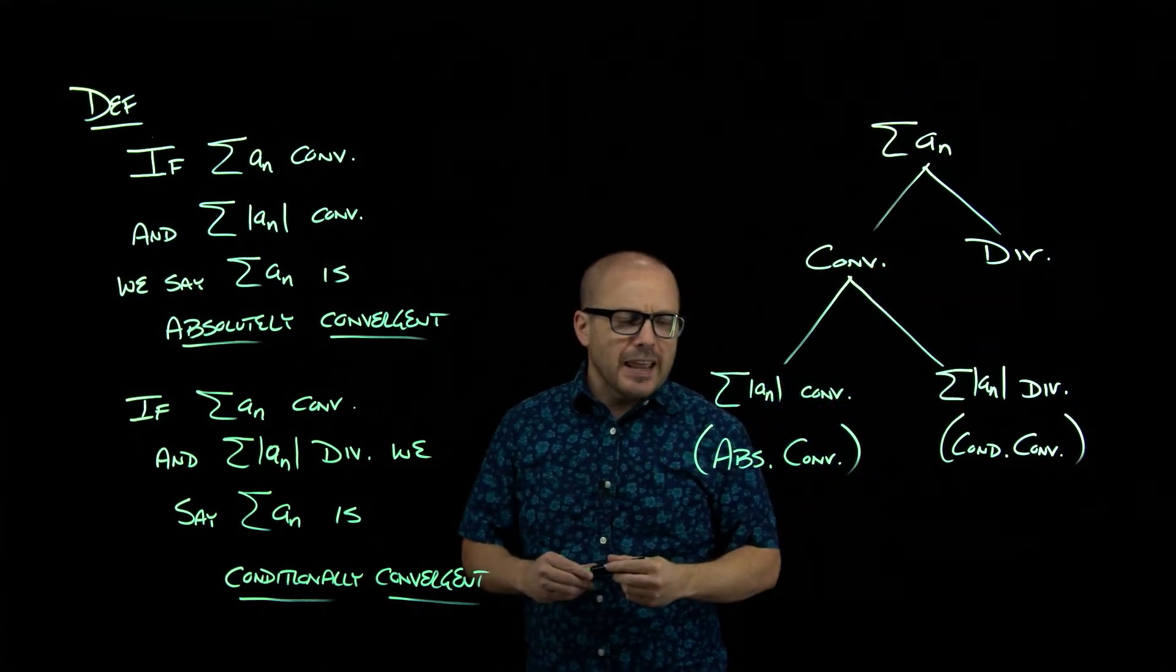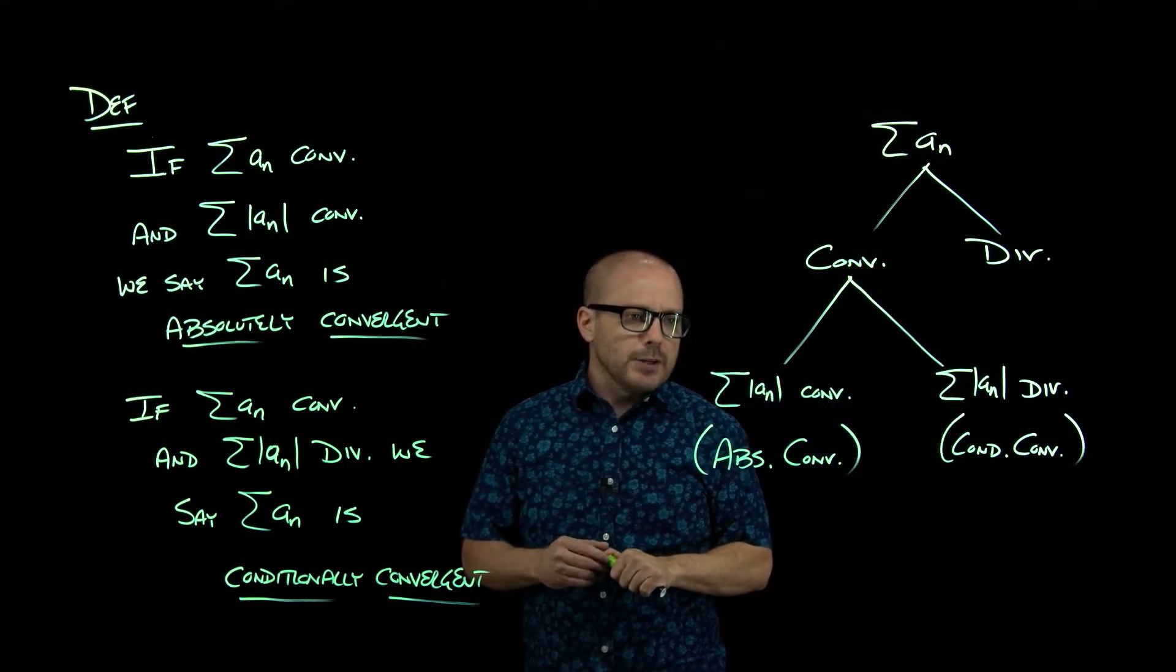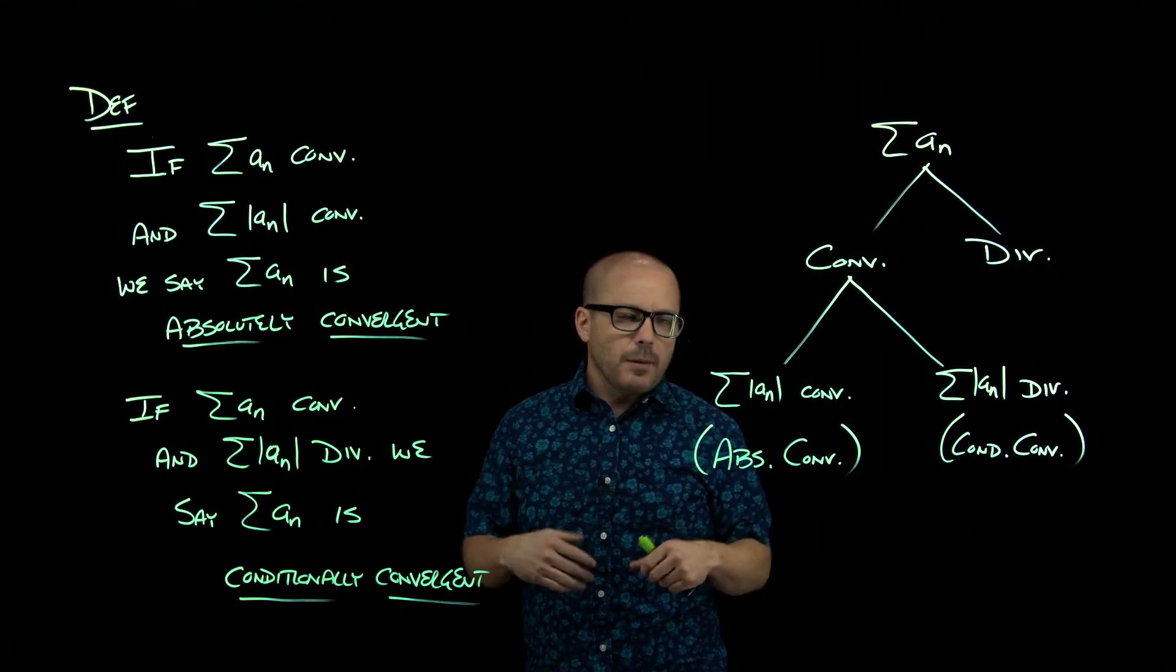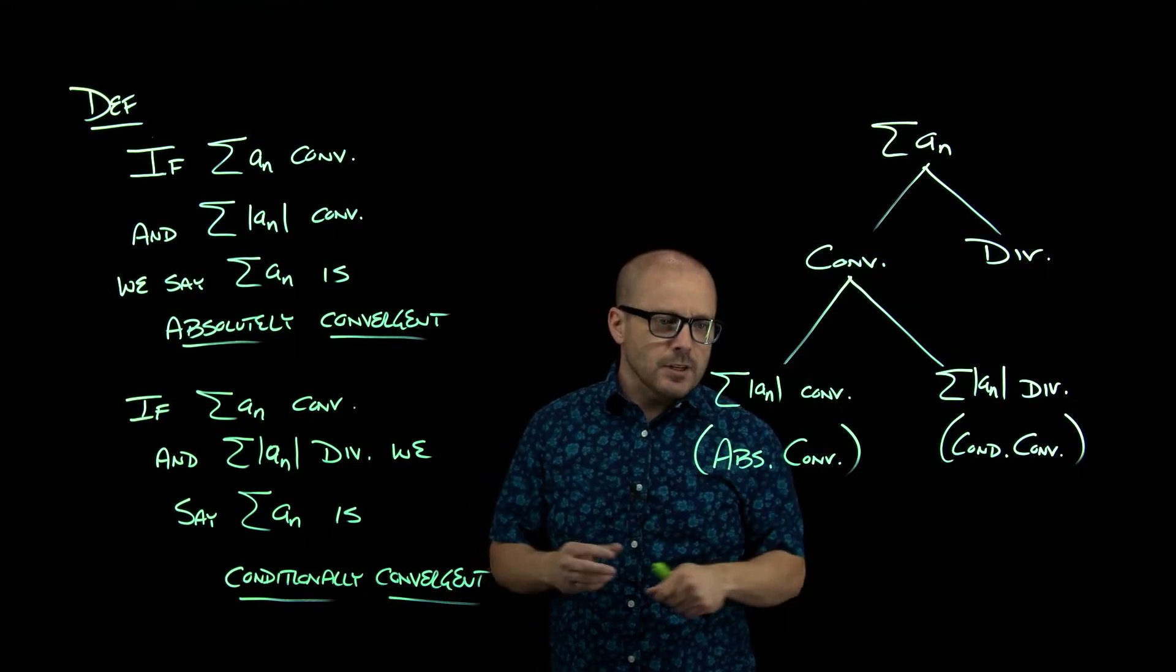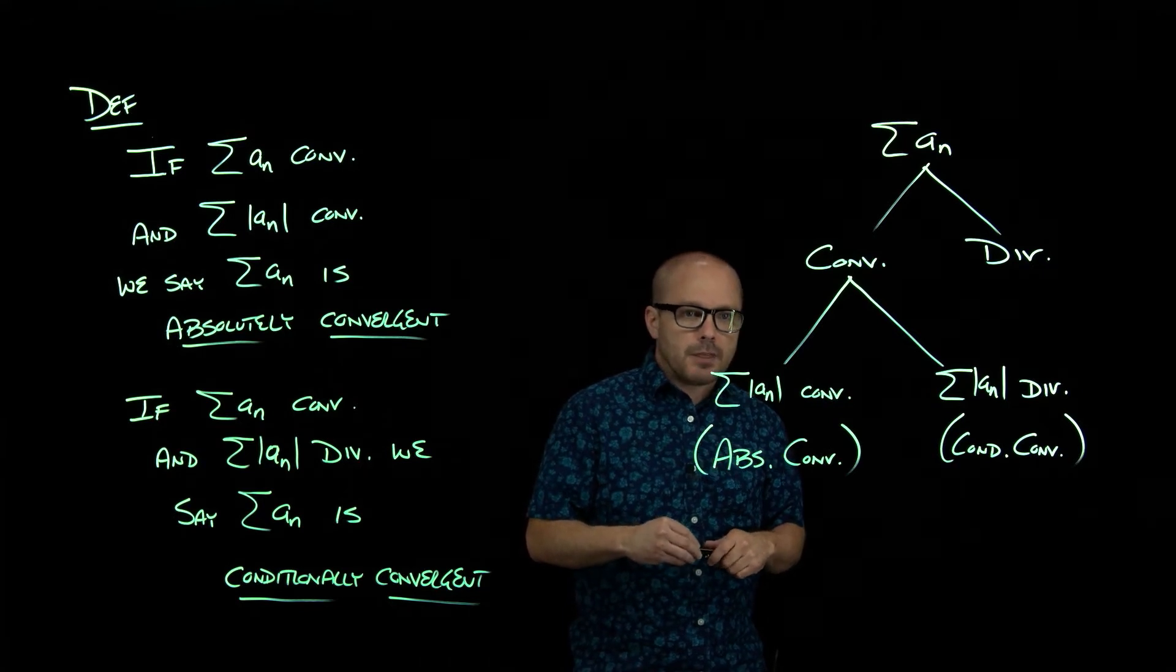But I'll do an example and there's an example in the book, but I'll do an example later to kind of highlight that, how you would go about rearranging. This is something the book calls our rearrangement theorem.